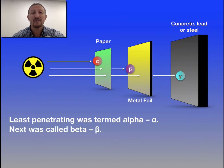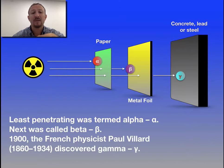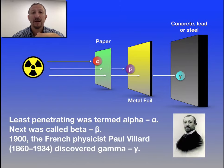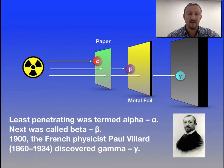Alpha then is least penetrating, followed by beta, and then finally we've got our gamma particle. Gamma was actually identified by the French physicist Paul Villard, and he was the last person to basically add the last little piece to our radiation theory.